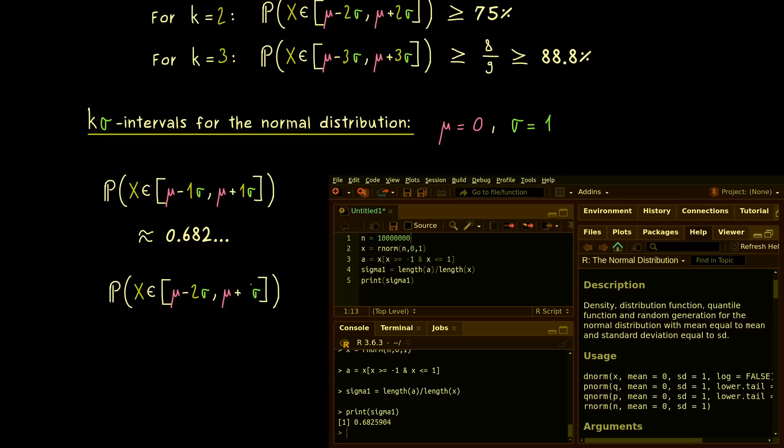And now in the same way, we could simulate the 2 sigma interval here. We don't have to change much. Instead of a 1, we have a 2 here. And then let's run the script to see what we get here. Maybe let's run it more times. But we definitely see we are at 95%. So you see, our probability here is much higher than our estimate from the Chebyshev's inequality.